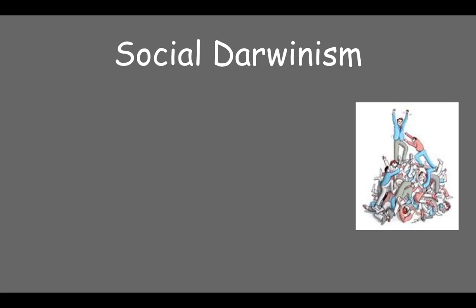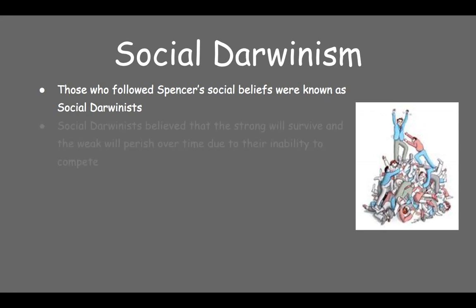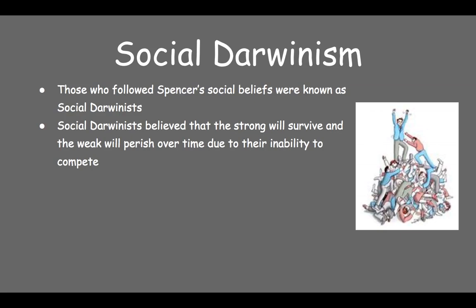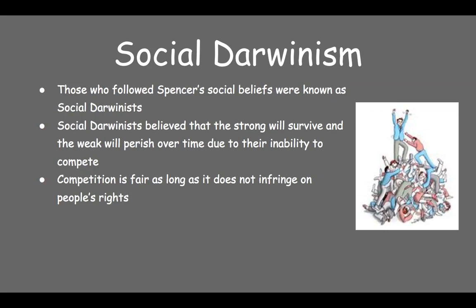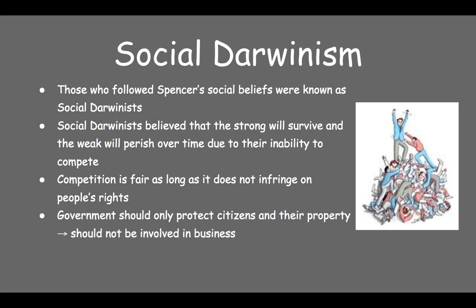Those who followed Spencer's social beliefs were known as social Darwinists. Social Darwinists believed that the strong will survive and the weak will subsequently perish over time due to their inability to compete. Because Spencer believed this change is best for the evolution of civilization and a utopian society, he would strongly oppose any attempts by the government to stop this from happening. As long as competition does not infringe on the equal rights of competitors, anything is fair game to Spencer.